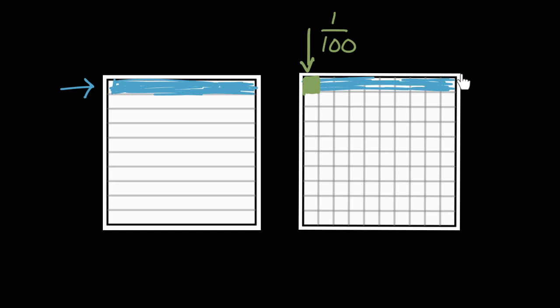Because when you divide 10 into 10 equal pieces, you're gonna end up with 100 pieces. So a tenth of a tenth is a hundredth.